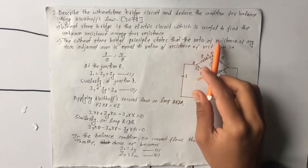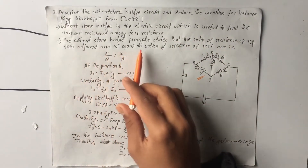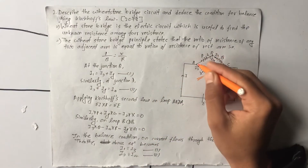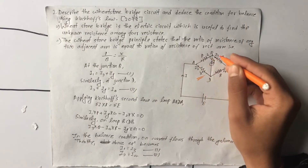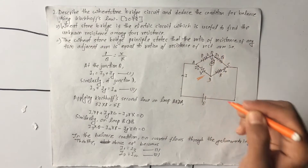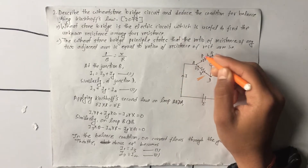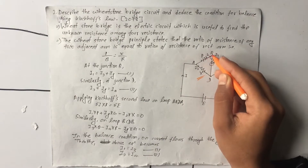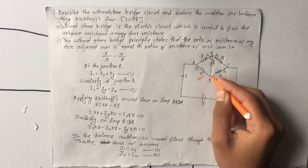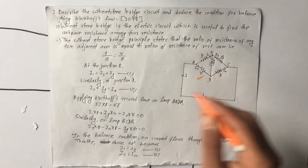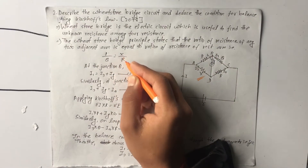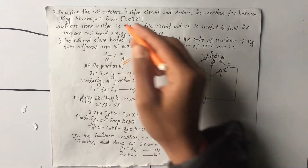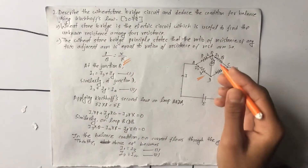The ratio of resistance of any two adjacent arms is equal to the ratio of resistance of the remaining arms. That is: X by R equals P by Q. This is the Wheatstone Bridge principle, which we are going to prove.